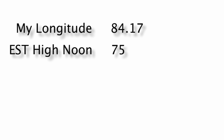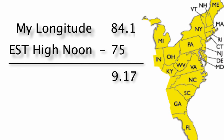Here's what you do. Take your local longitude and subtract from it your time zone high noon longitude. What we're trying to do here is find out how many degrees longitude there is between you and your time zone high noon.